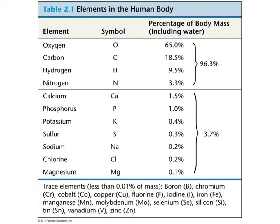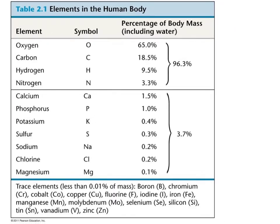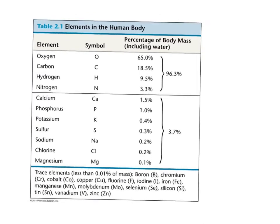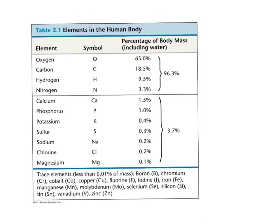Let's talk about the elements we find in the human body. The most common elements are oxygen, carbon, hydrogen, nitrogen, calcium, phosphorus, and potassium.